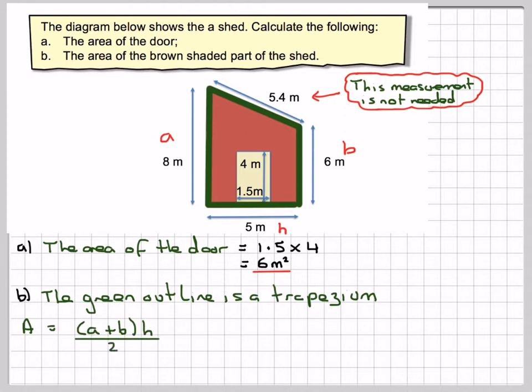Therefore, the area of a trapezium is equal to A plus B times H over 2. So we add together the two parallel sides, multiply by the height, and then divide by 2.